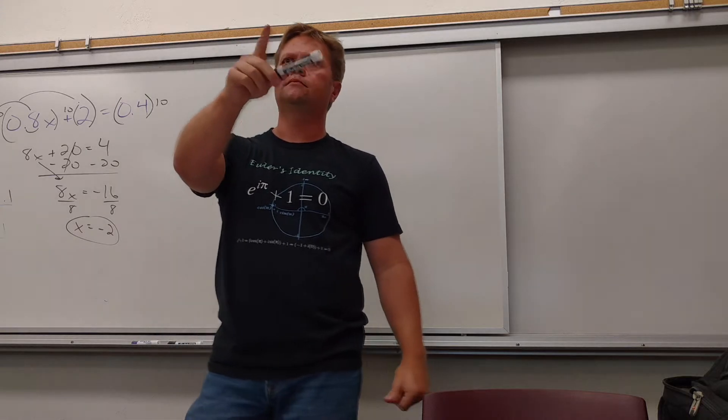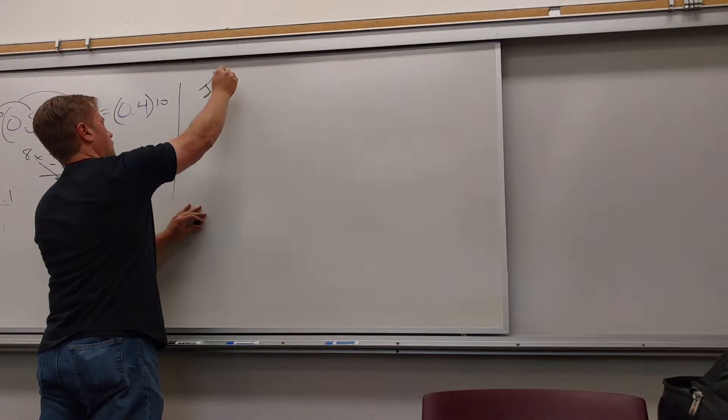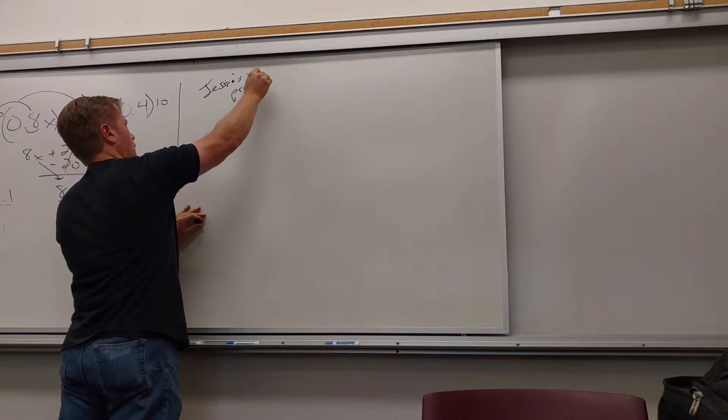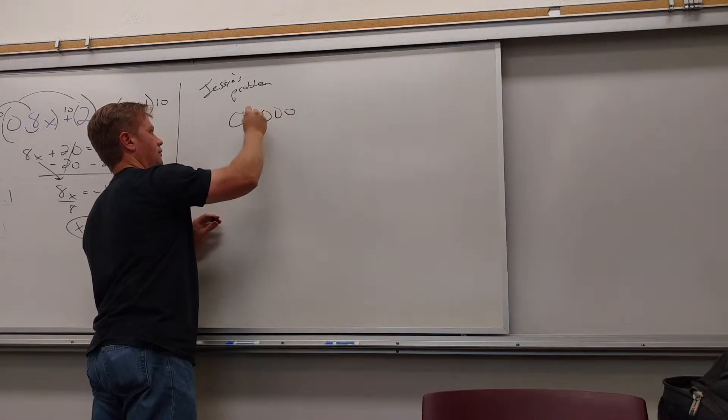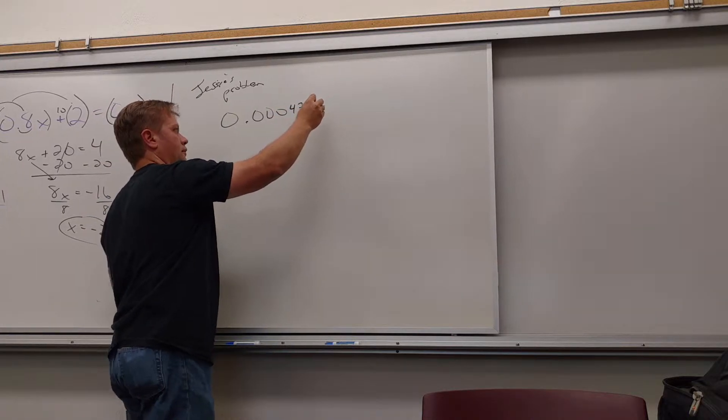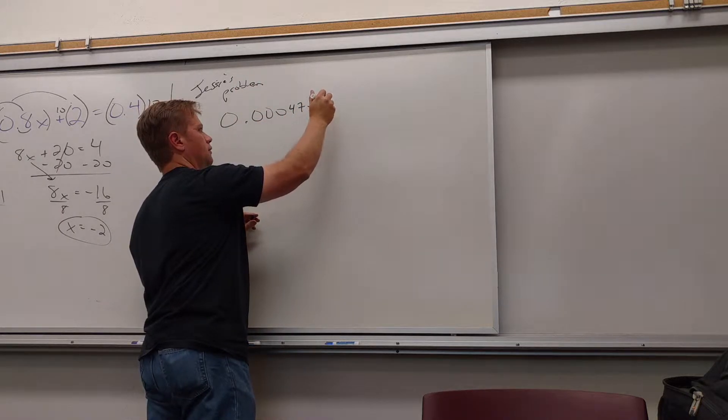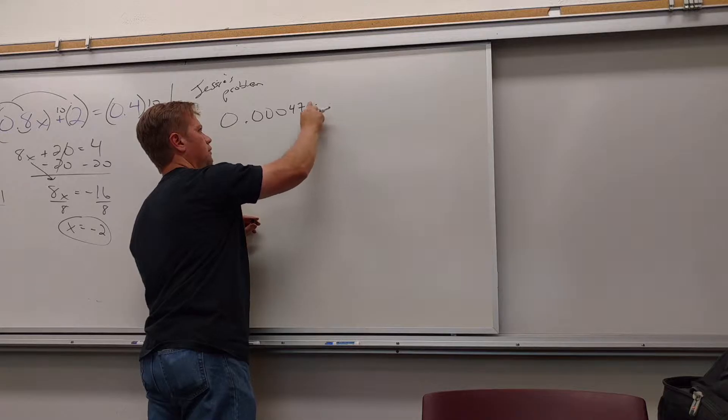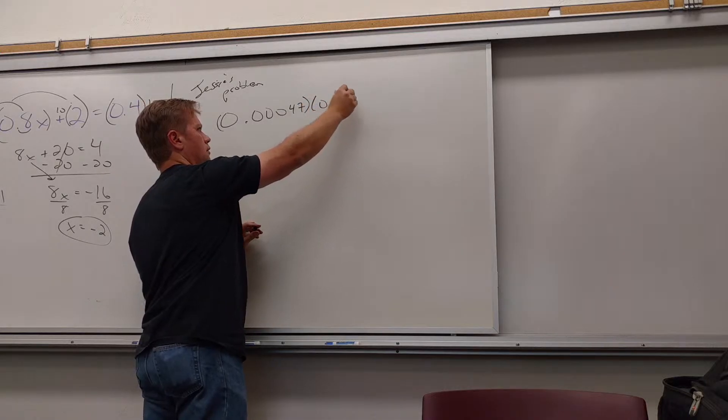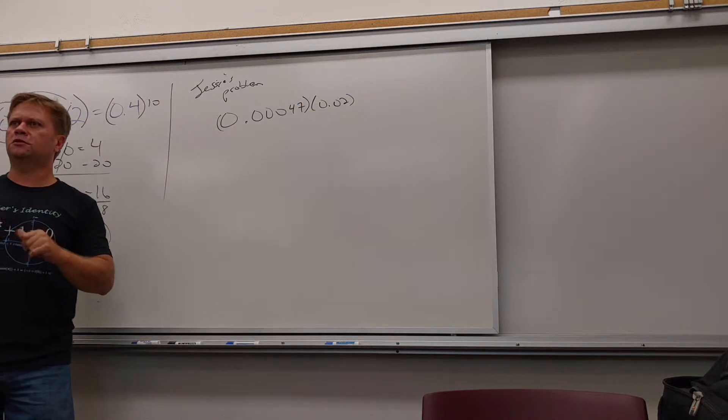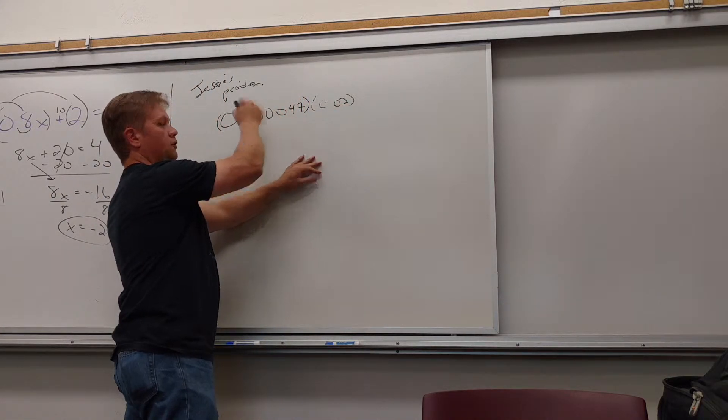Guys, do 0.0047 times x. Oh wait, wait, wait. Do you mean just multiply that by 0.02? Oh, you mean just like that? What do you mean? Yeah, that's what I meant, but that's where you just do twice this and then move it back one, two, three, four, right?